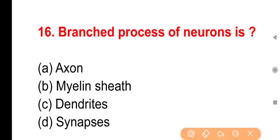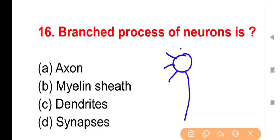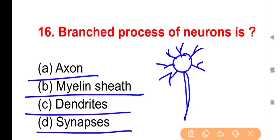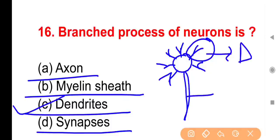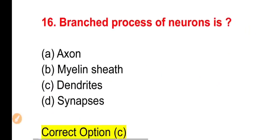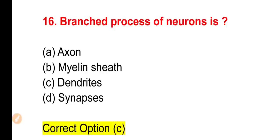Question 16: The branched processes of neurons are known as — Option A, Axon; Option B, Myelin sheath; Option C, Dendrites; Option D, Synapse. The right answer is Option C — Dendrites. The long structure is the axon. Synapse is the junction between two neurons, while myelin is the protective covering of the axon.